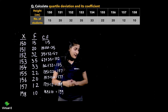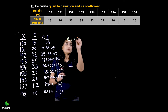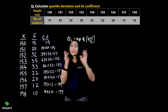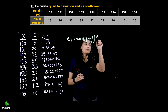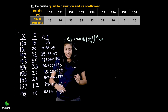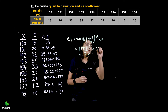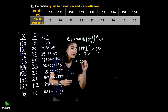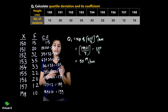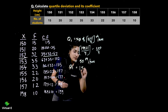Now we need Q1 and Q3. Starting with Q1 — the formula is size of the (N+1)/4th item. N is 199, so we compute 199 plus 1 upon 4, which is 200 by 4, giving the 50th item. The 50th item does not fall in 15 or 35, so it falls in the next cumulative frequency group. Therefore Q1 is 152.